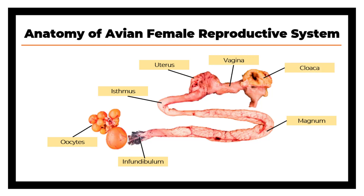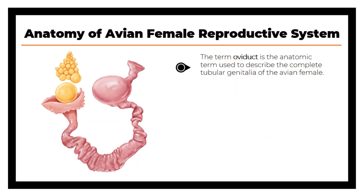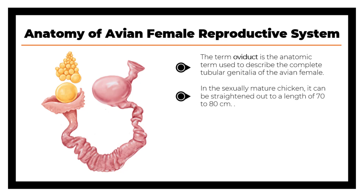Overall, the tract comprises of a pair of ovaries and oviducts leading to the cloaca. The term oviduct is the anatomic term used to describe the complete tubular genitalia of the avian female. It is highly coiled and extends from the ovary to the cloaca. In the sexually matured chicken, it can be straightened out to a length of 70 to 80 cm.